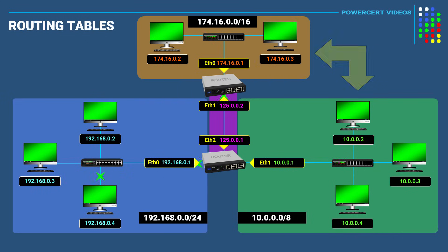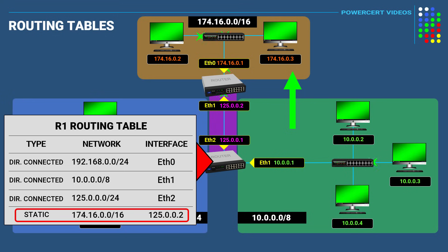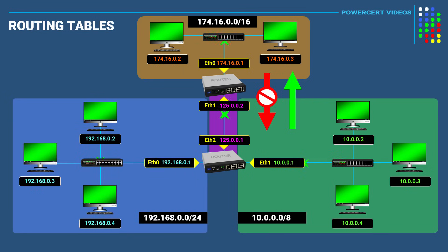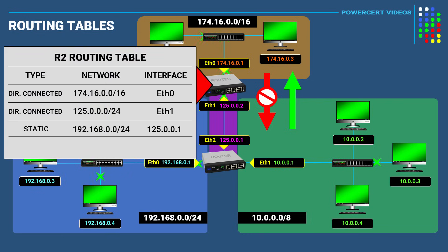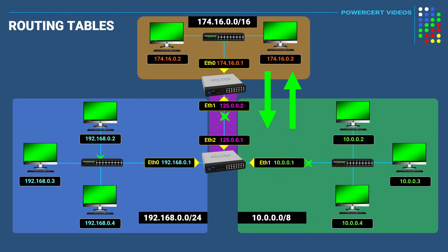But what about communication between the 174 and the 10 network? The 10 network is able to communicate with the 174 network because earlier we created a static route that informed this router how to get to the 174 network. But the 174 network can't communicate back to the 10 network because we haven't informed that router where to find the 10 network. So we log back into that router and create a static route for the 10.0.0.0 network with the appropriate next hop interface, and now all the networks can communicate with each other in all directions.